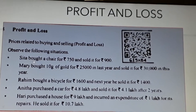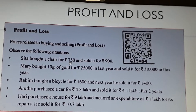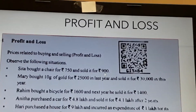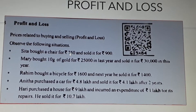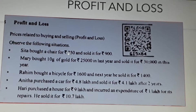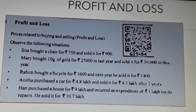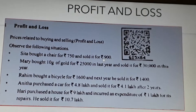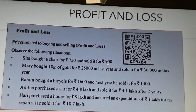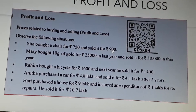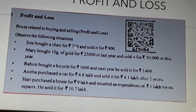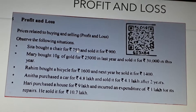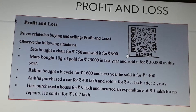Sita bought a chair for 750 rupees and sold it for 900 rupees. 750 rupees is the cost price. 900 rupees is the selling price. Which is higher? 900 rupees is higher — that means the selling price is higher and the cost price is lower. The difference is 900 rupees minus 750 rupees, which equals 150 rupees.